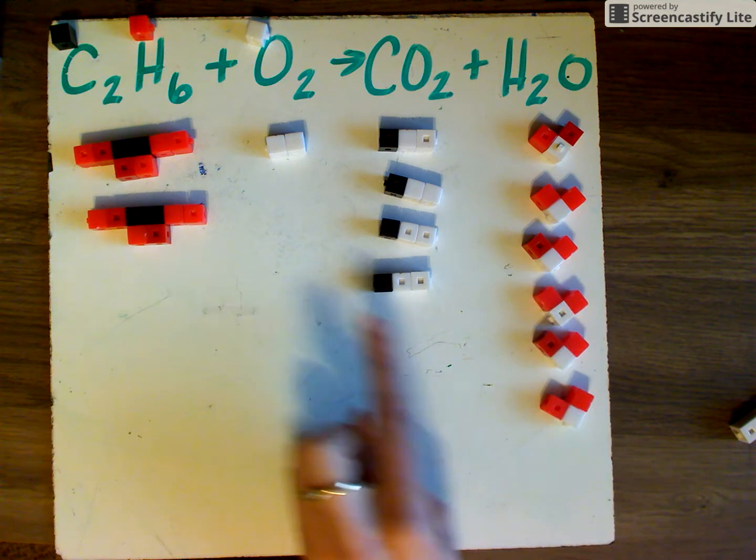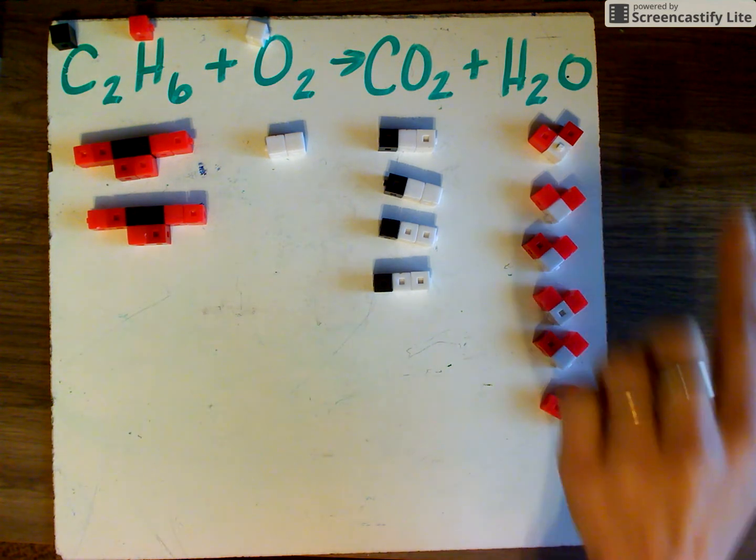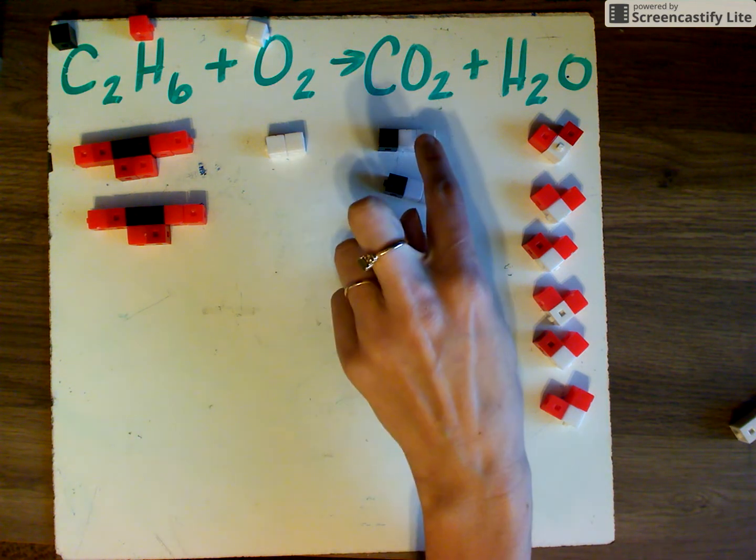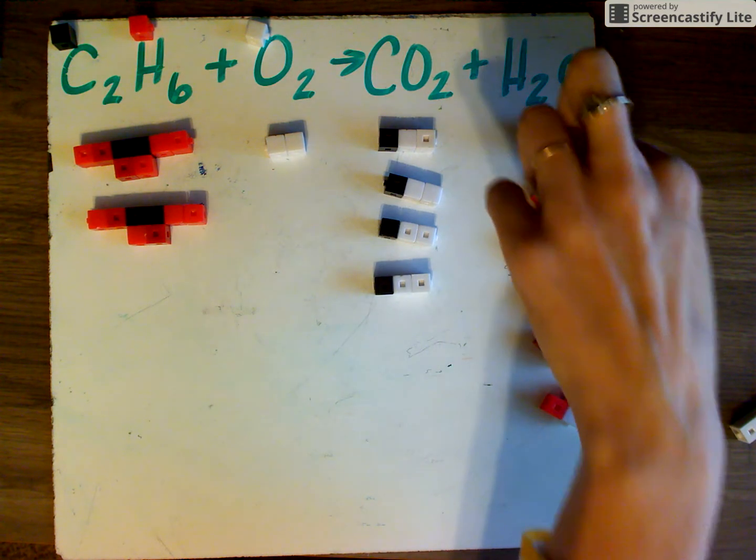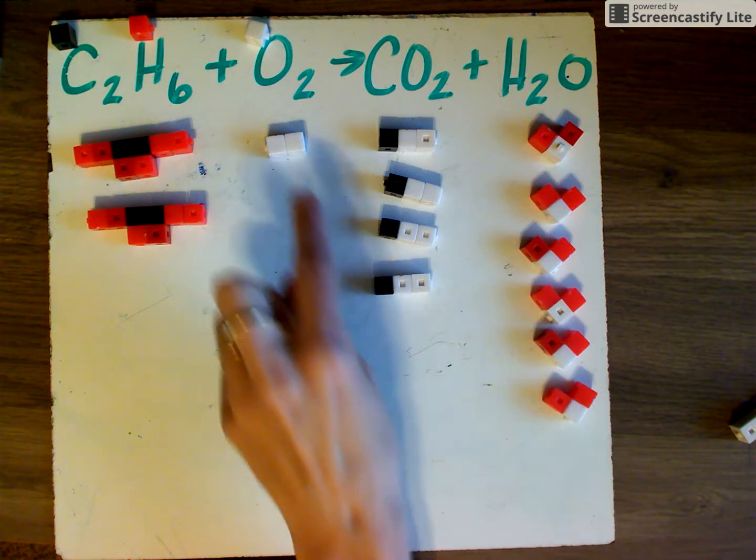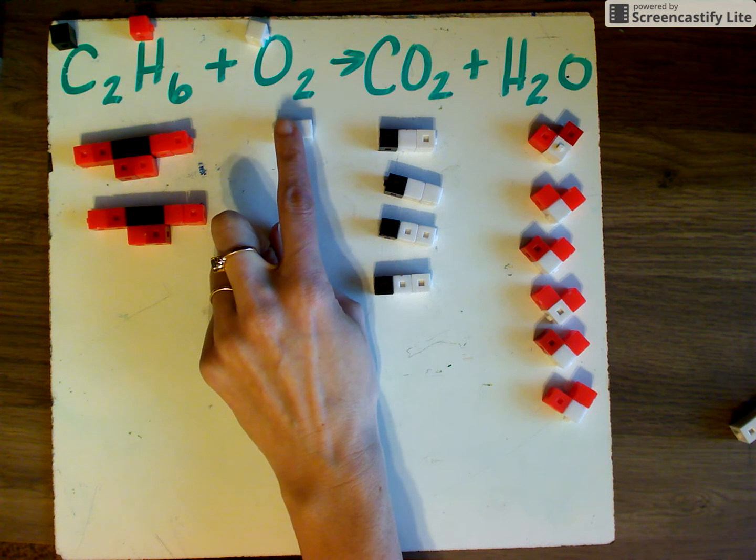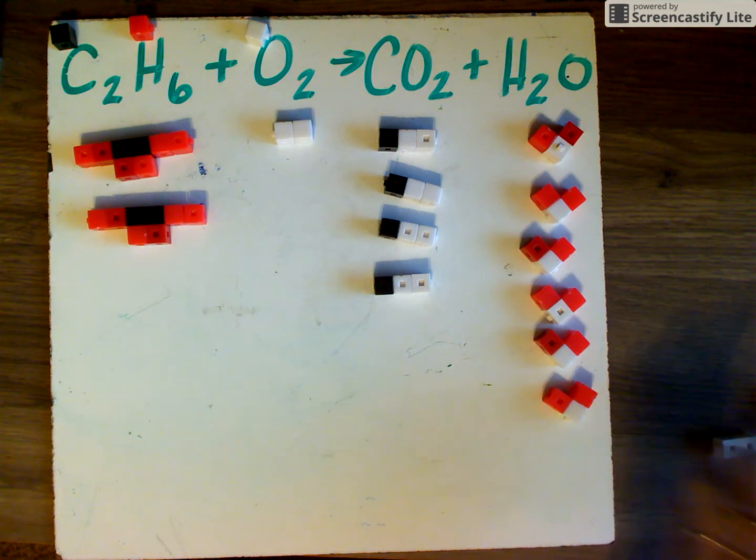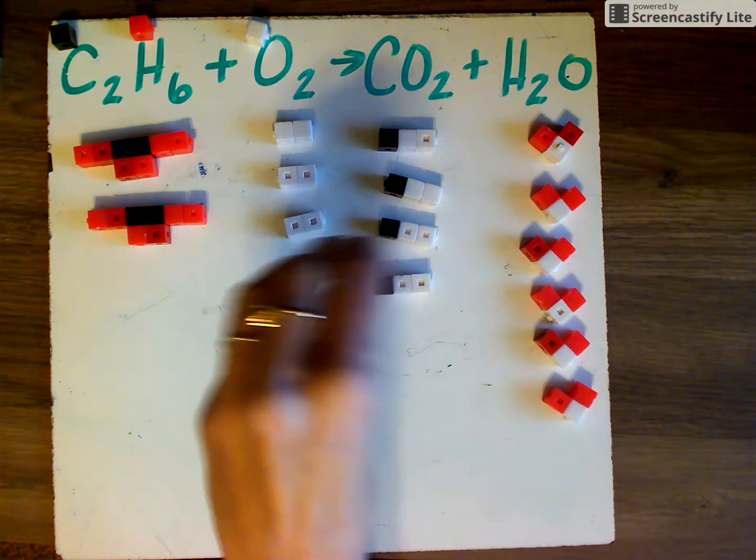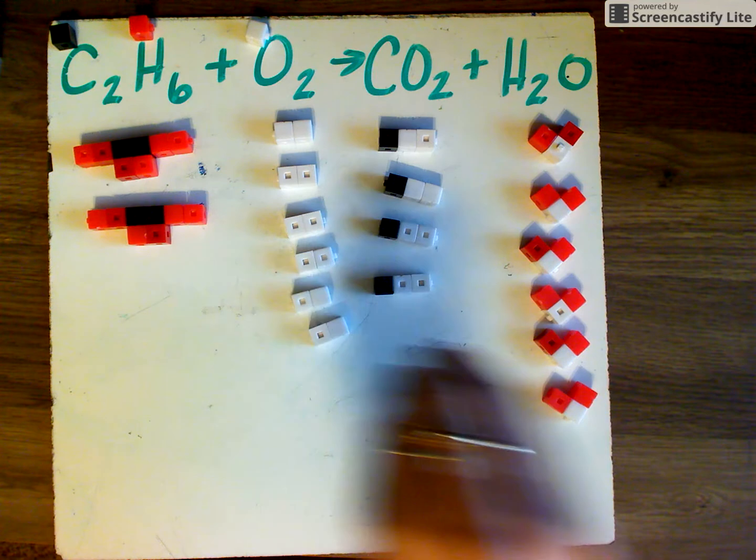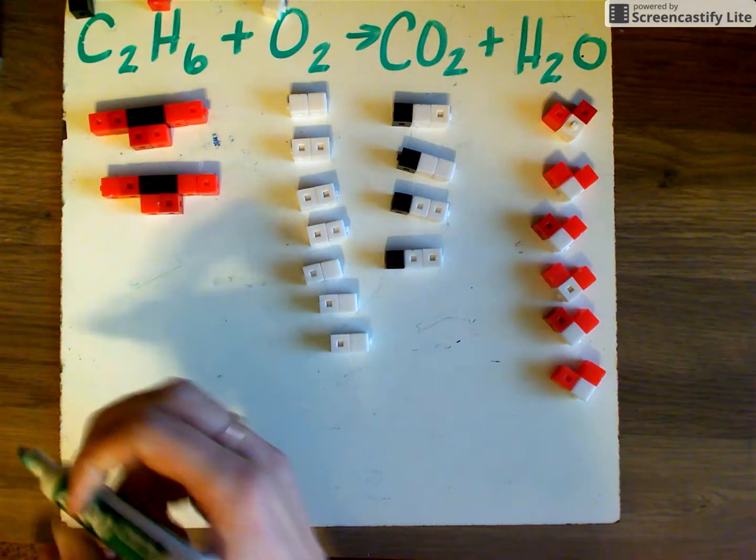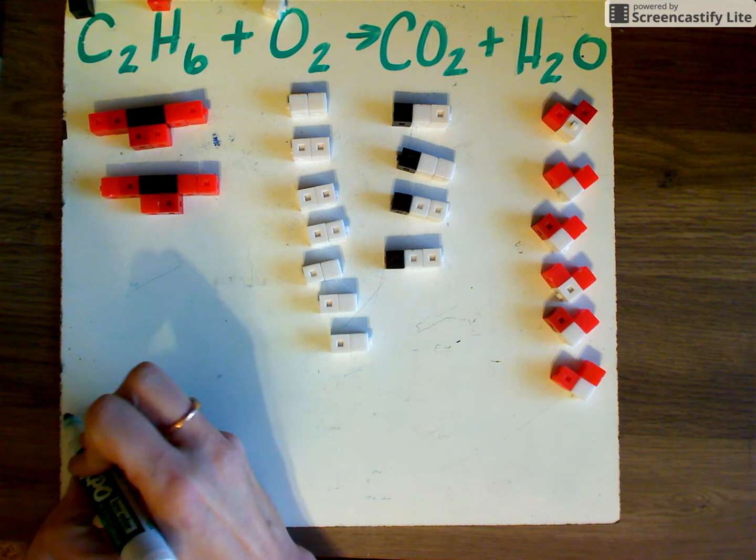So now we've increased the number of everything, but we're still short oxygen atoms right here. So now when we look over here, we have two, four, six, eight, nine, ten, eleven, twelve, thirteen, fourteen oxygen atoms. So I have two right here, so I need 12 more or six pairs of oxygen. So our final formula looks like this.